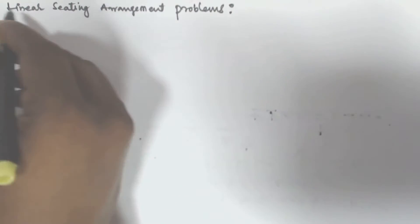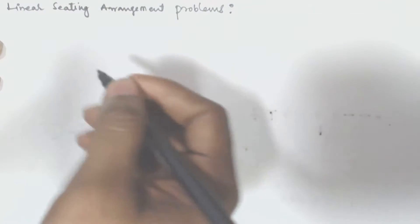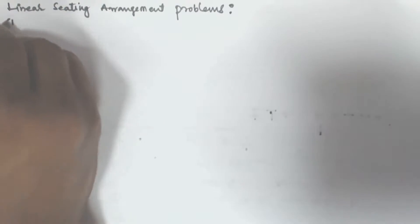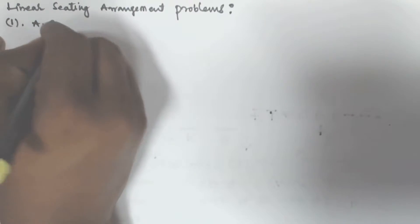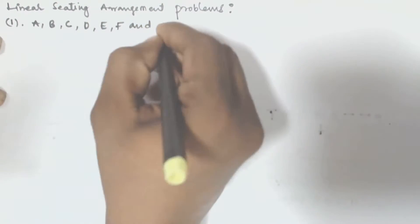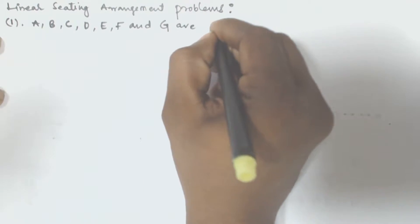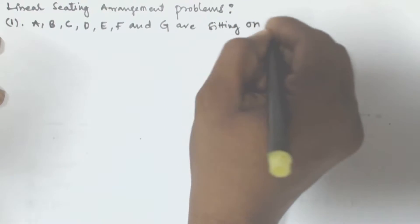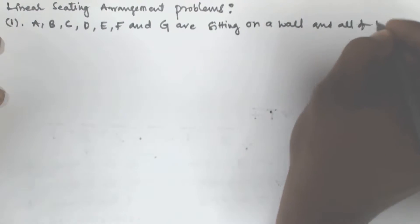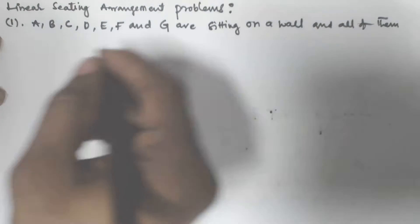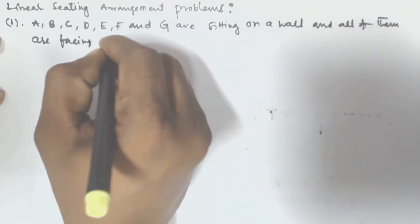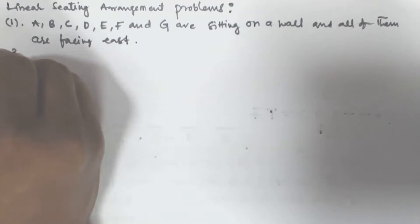Hello friends, in this video we will see another problem based on linear sitting arrangement. A, B, C, D, E, F and G are sitting on a wall, and all of them are facing east.